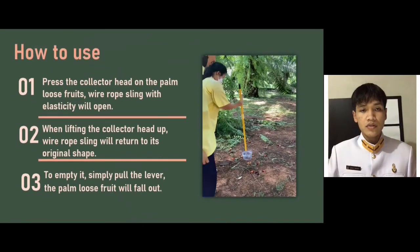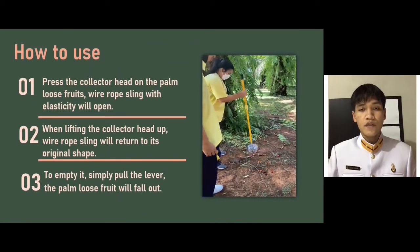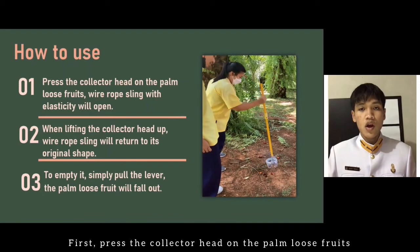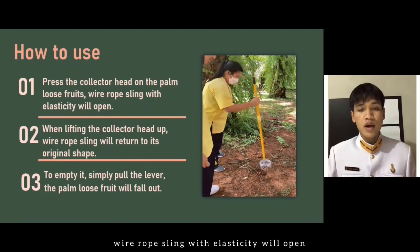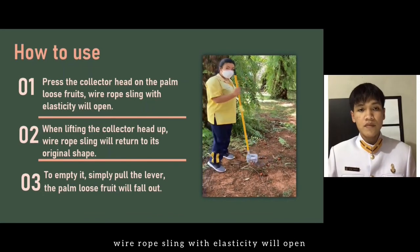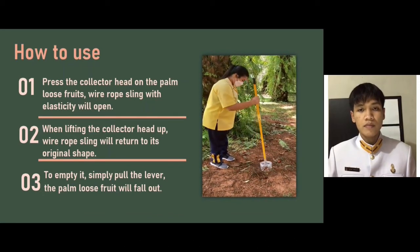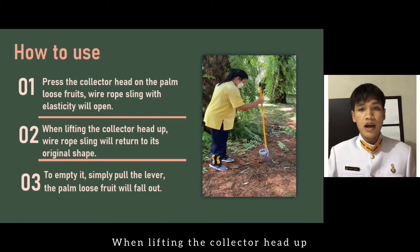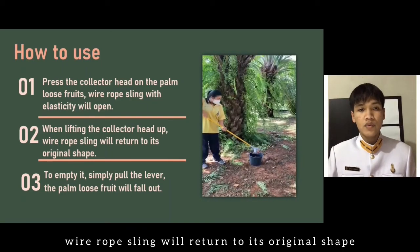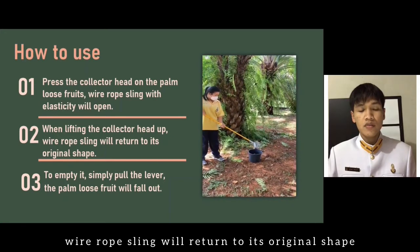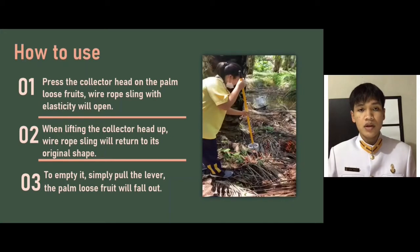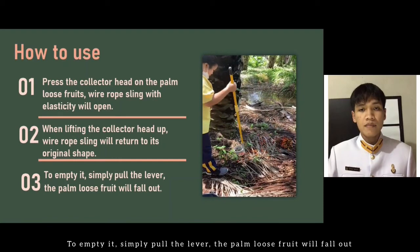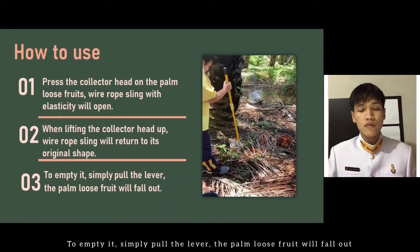How to use this device: First, press the collector head on the palm loose fruit — the wire rope sling with elastic force will reopen. When lifting the collector head up, the wire rope sling will return to its original shape. To empty it, simply pull the lever and the palm loose fruit will fall out.